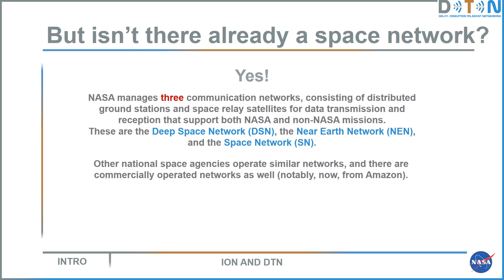Don't we already have a space network? Yes, we have quite a few. NASA manages three of them, consisting of distributed ground stations and space relay satellites that support both NASA and non-NASA missions: the Deep Space Network, the Near Earth Network, and the Space Network. Other national space agencies operate their own networks, and there are a growing number of commercially operated networks, such as Amazon.